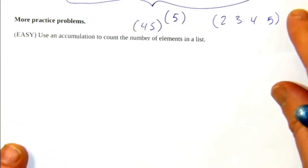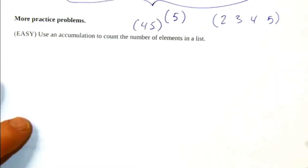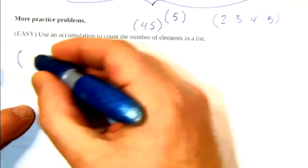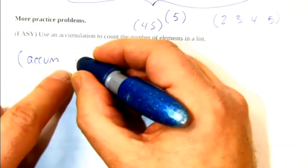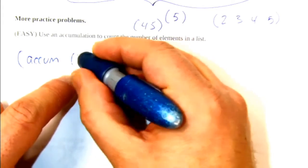We want to count the number of elements in a list. So the basic form is going to be some accumulation. We're going to have to provide an op. So that's going to be a lambda.